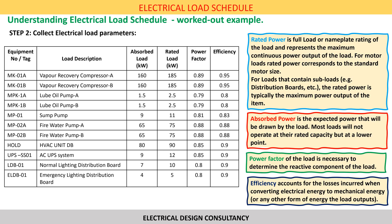Once we have the preliminary list of loads, we need to collect the electrical parameters like the rated power, absorbed power, power factor and efficiency. Rated power is the full load or nameplate rating of the load and represents the maximum continuous power output of the load. For motor loads, rated power corresponds to the standard motor size. For loads that contain sub-loads like distribution boards, the rated power is typically the maximum power output with all sub-loads in service.